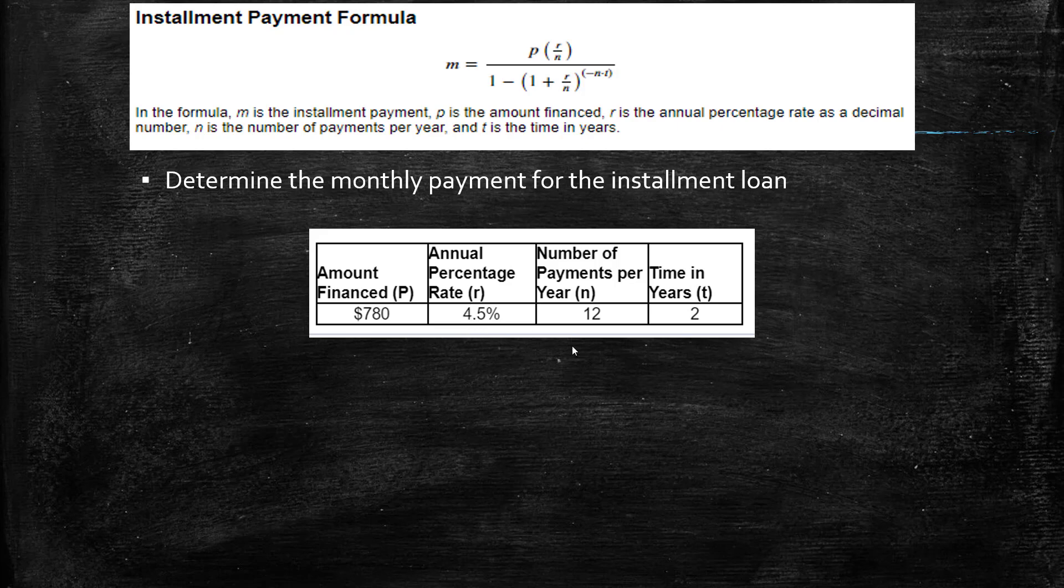annual percentage rate of 4.5%, the number of payments per year is 12 (so you're paying monthly), and you're doing this for two years. You want to know how much your monthly payments are going to be. So all you